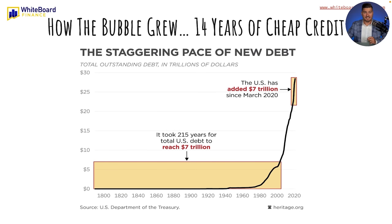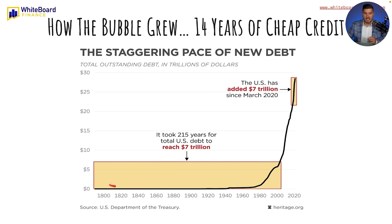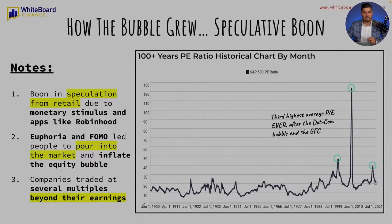The next slide shows the staggering pace of new debt we've had to prop up the market since 2020, after COVID. It took 215 years for total U.S. debt to reach $7 trillion. And then the U.S. has added another $7 trillion since March of 2020. So what took 215 years to get to took about two years since March.